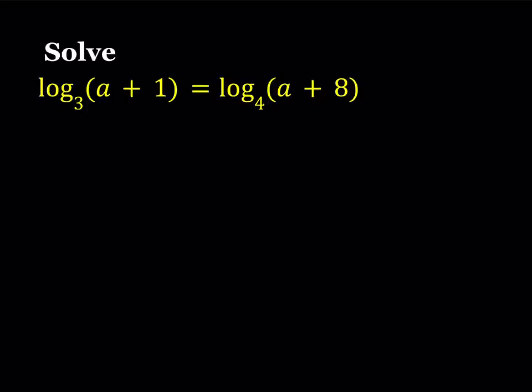If you had the same base, you could safely say that whatever we're logging, they're equal to each other. Or if we had bases that are relatable like 2 and 16 or 27 and 81, then we could easily use that property.